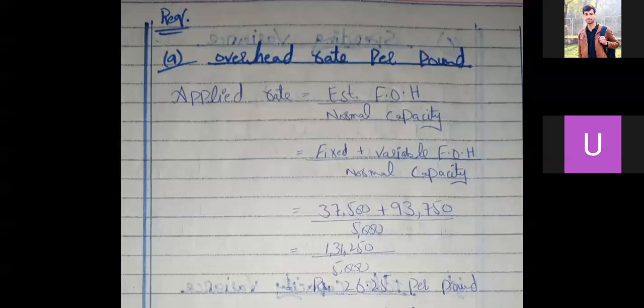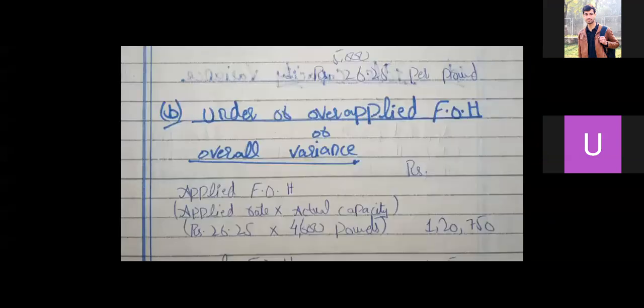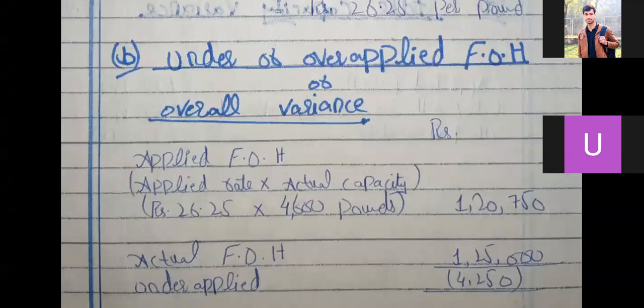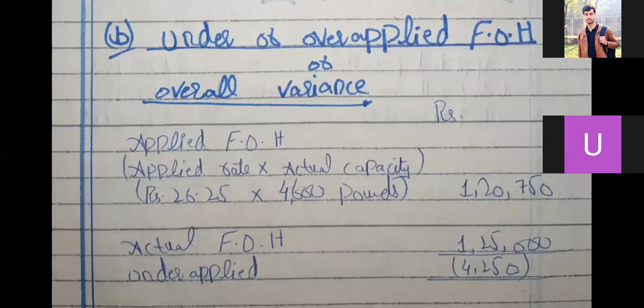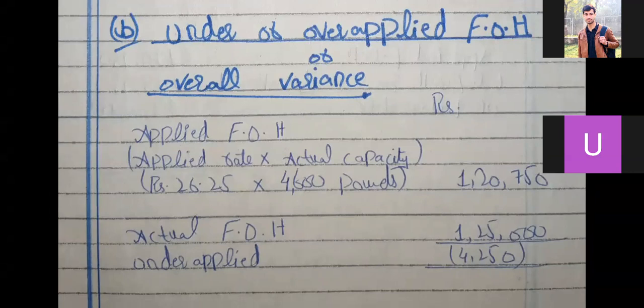Next, find under or over applied FOH. Applied FOH equals applied rate times actual capacity: 26.25 per pound times 4,600 pounds equals Rs. 1,28,750. Comparing to actual FOH of Rs. 1,25,000, the result is Rs. 3,750 — wait, it was Rs. 4,250 under applied, meaning actual FOH exceeded applied FOH.